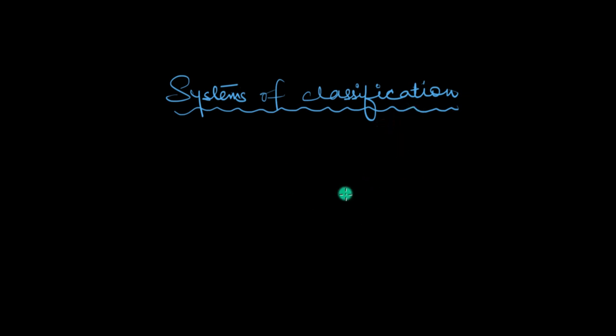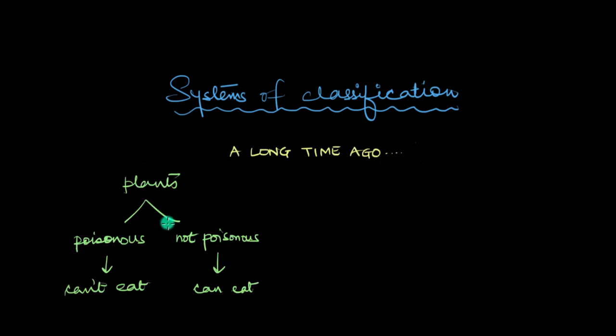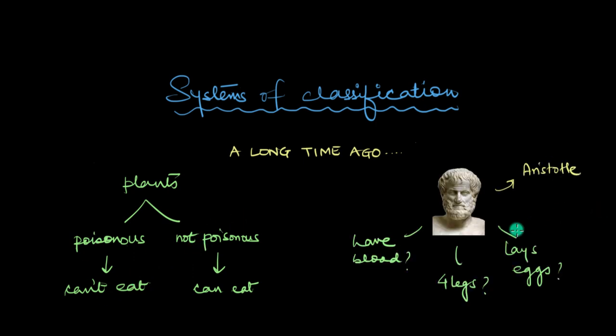People have likely been trying to name and classify things around them for a very long time. Like back in ancient times, some people tried to classify plants based on if they are poisonous or edible. Then the Greek philosopher Aristotle tried to classify living beings based on whether they had blood, or if they could lay eggs, or if they had four legs, stuff like that.